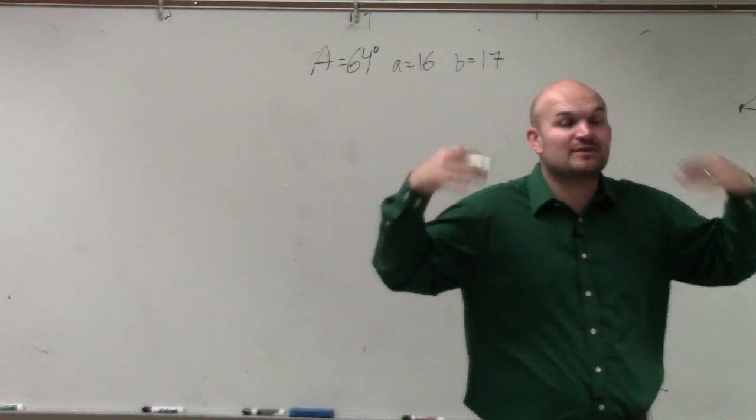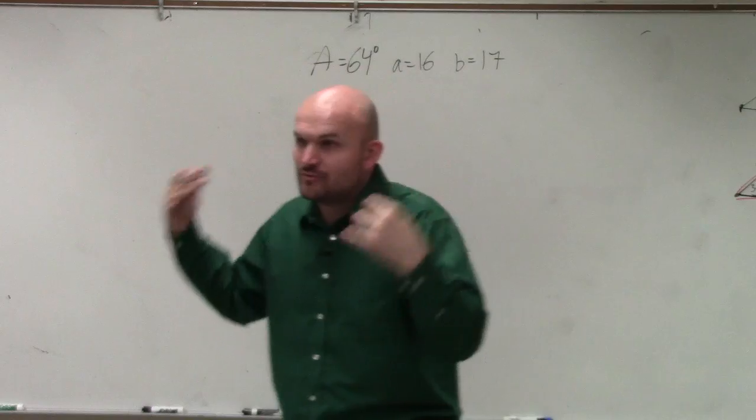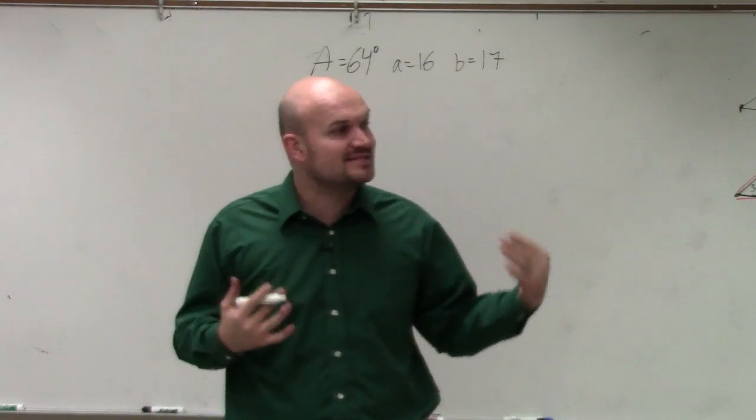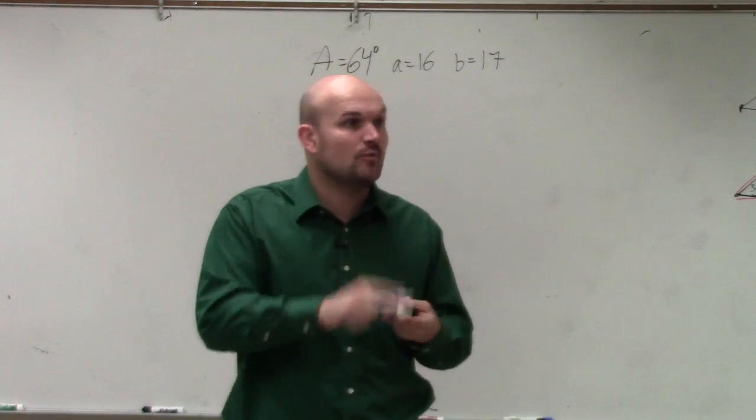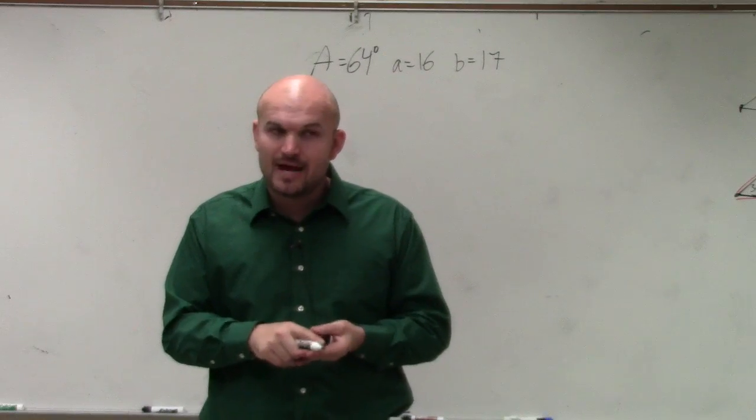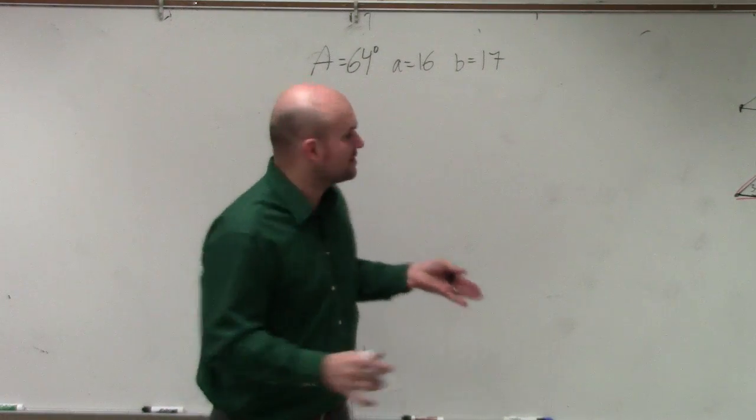So therefore, we have the option of an ambiguous case. To evaluate for the missing sides, we can either have no triangle, one triangle, or two triangles. Now, at first point, we don't really know what's going to happen or where this works.